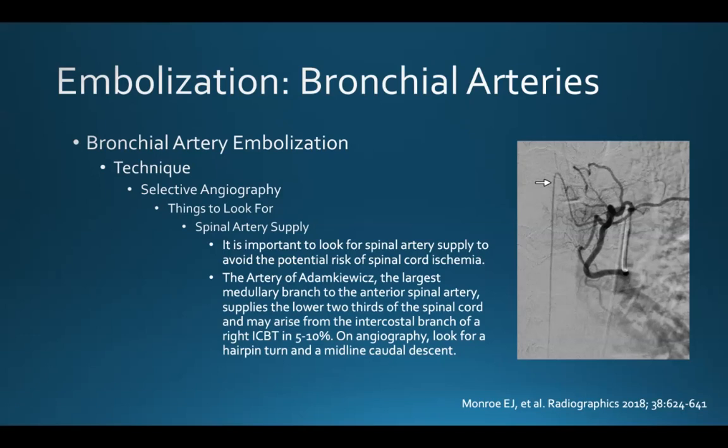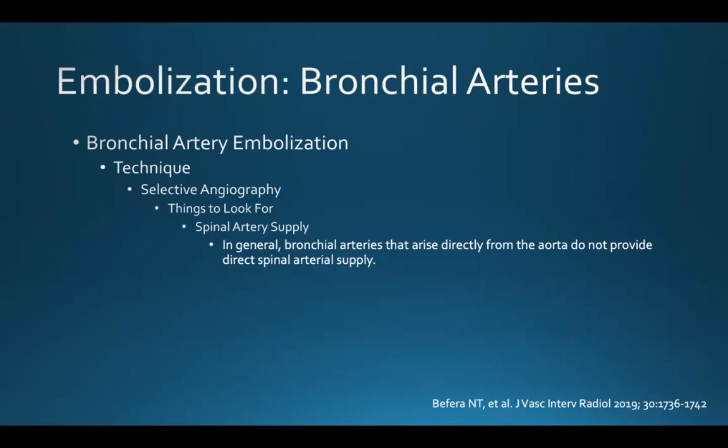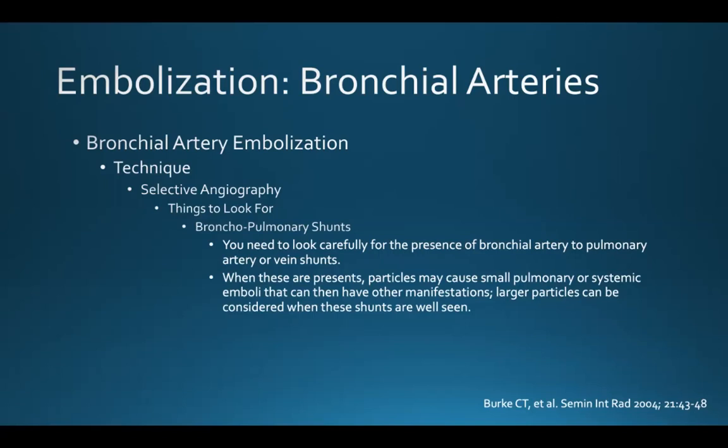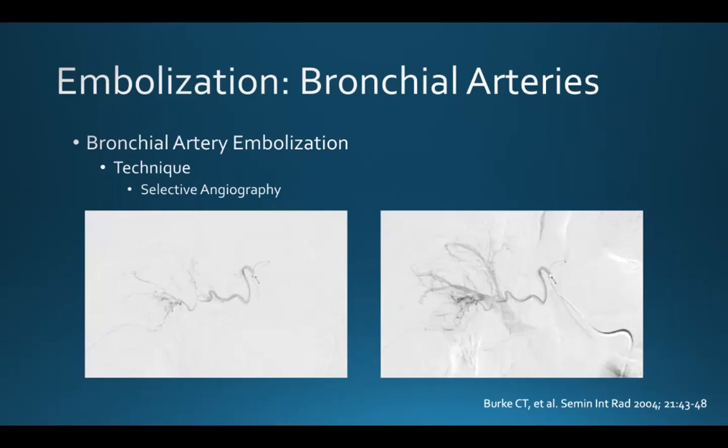The other thing to look for is spinal artery supply — it's important to look for this to avoid the potential risk of spinal cord ischemia. The artery of Adamkiewicz, which is the largest medullary branch of the anterior spinal artery, supplies the lower two-thirds of the spinal cord and may arise from the intercostal branch of a right intercostal bronchial trunk in 5% to 10% of patients. On angiography, you're going to look for a hairpin turn and a midline caudal descent. In general, bronchial arteries that arise directly from the aorta do not provide direct spinal artery supply. You also need to look carefully for bronchial artery to pulmonary artery or vein shunts — when these are present, particles may cause small pulmonary or systemic emboli, so larger particle sizes should be considered. This is an example of a bronchial artery to pulmonary vein shunt.